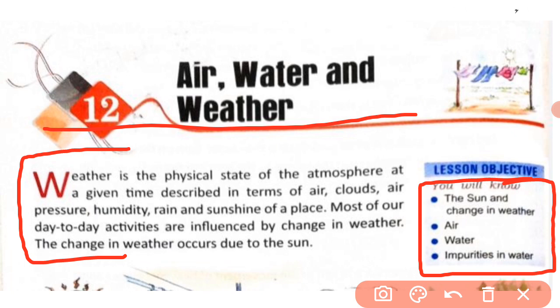Weather is the physical state of the atmosphere at a given time, described in terms of air, clouds, air pressure, humidity, rain, and sunshine of a place. Weather is the atmosphere ki physical state hai — described on the basis of conditions like clouds, air pressure, humidity, rain, and sunshine at a particular place.